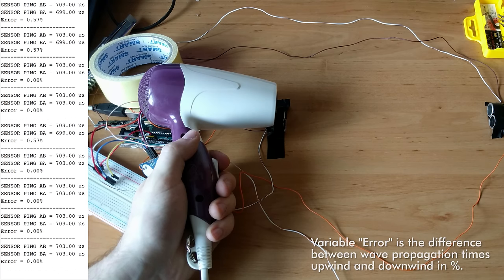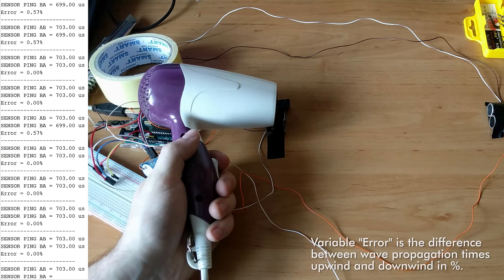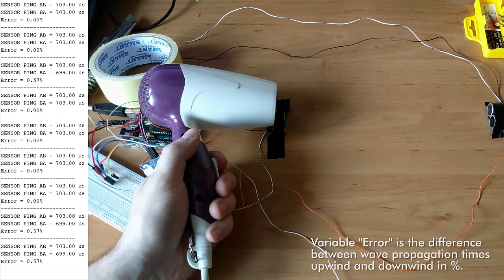The first test in an open environment generates pretty constant readings. With no air movement, propagation time in both directions is pretty much the same with error around 1%. This can probably be compensated in software.